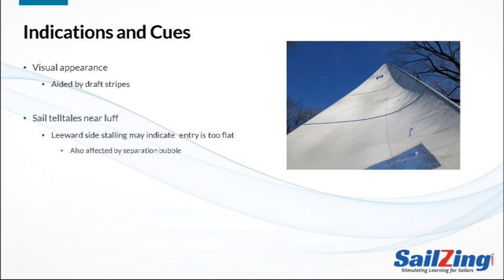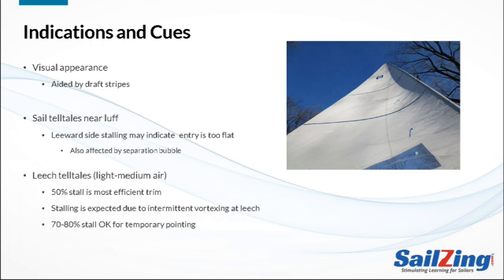Second, we can look at the leeward side telltales near the luff of the sail. If those leeward telltales are stalling and you're sheeted in and feel like you're in the groove, it might be that the sail's entry is too flat — try making the entry rounder, perhaps with Cunningham or by easing the outhaul. Stalling might also be due to the inevitable separation bubble behind the mast. Finally, you can look at the leech telltales. In heavy air they will tend to flow almost all the time, but in light to medium air they are useful indicators. If the leech is too hooked, the leech telltales will be permanently stalled and you should ease the mainsheet.